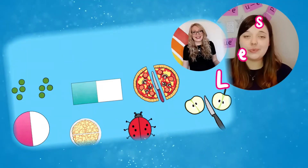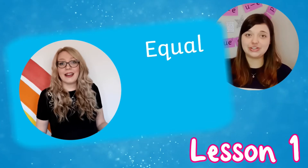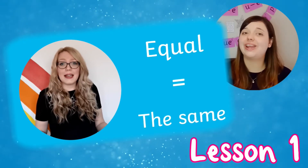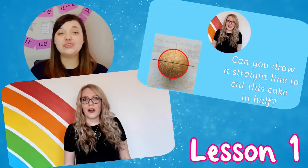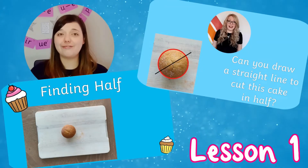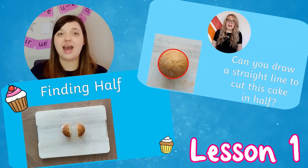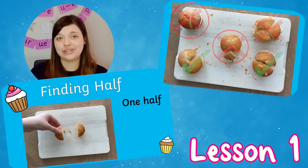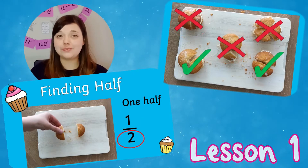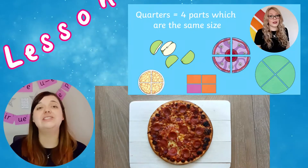In Lesson 1, Twinkle Teacher Catherine shows children how to recognise and find half of different shapes. Children learn that half means two equal parts and are shown some practical examples using concrete objects like cake.